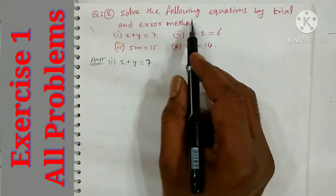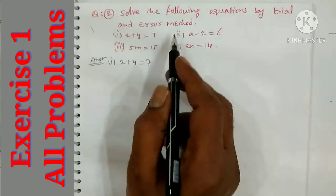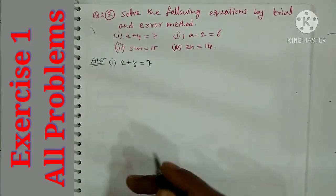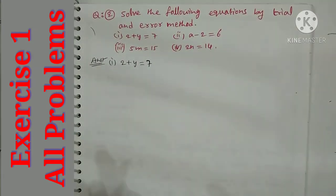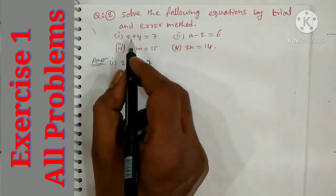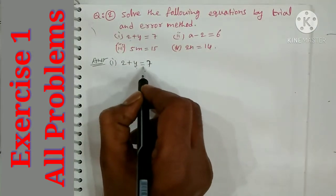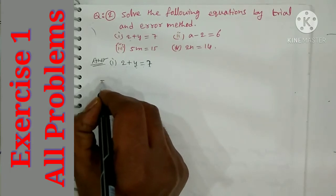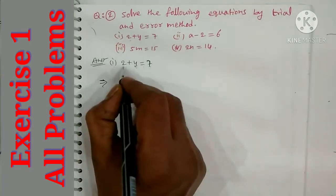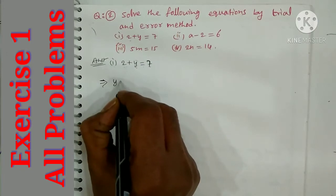Now question number 2: solve the following equations by the trial and error method. In the trial and error method, we choose a number and check if it equals the other side. The first question is 2 plus y is equal to 7. We will try different values of y by trial.